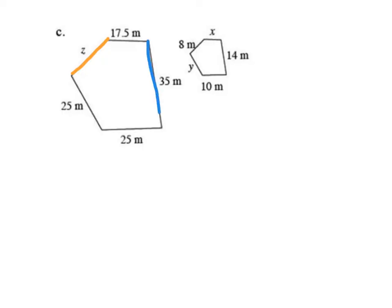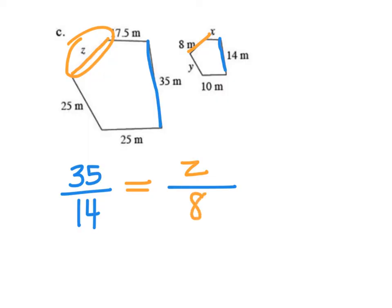So first thing I want to do is find two sides that correspond that I know both values for. So like in this big shape, I know that this side is 35, and in the little shape, it corresponds with 14. So I'm going to set that up as a ratio of the big shape to the small shape, okay, corresponding sides. Now, in similar figures, I know that the ratios of corresponding sides are equal. So I'll put my equal sign, and I'm going to pick the two sides I'm trying to find. So Z corresponds to 8, and I did big to small. So here, the big side to the small side.